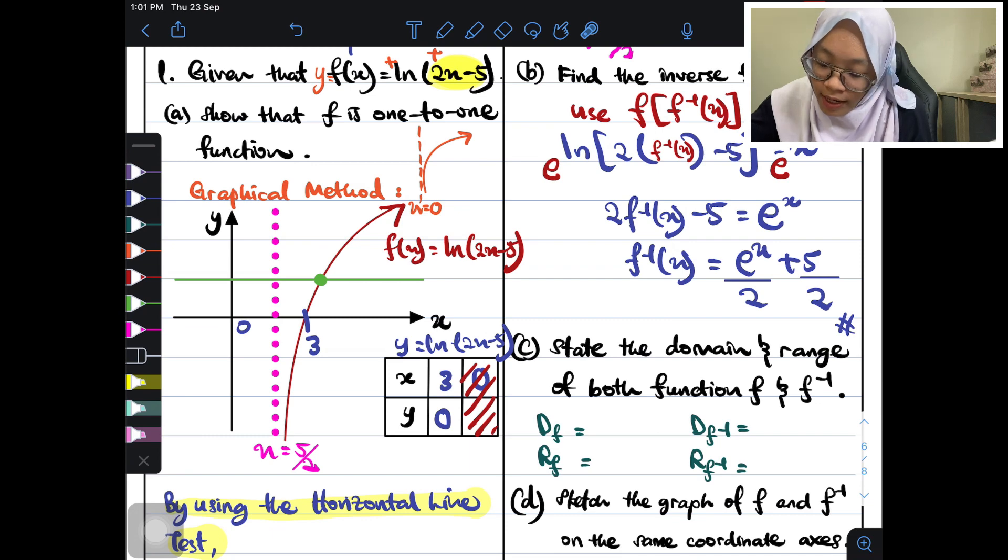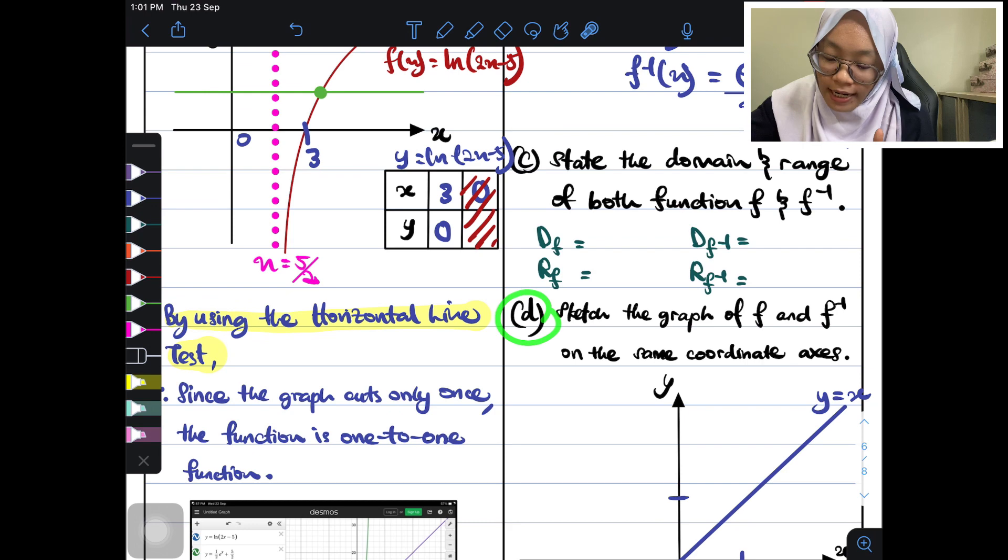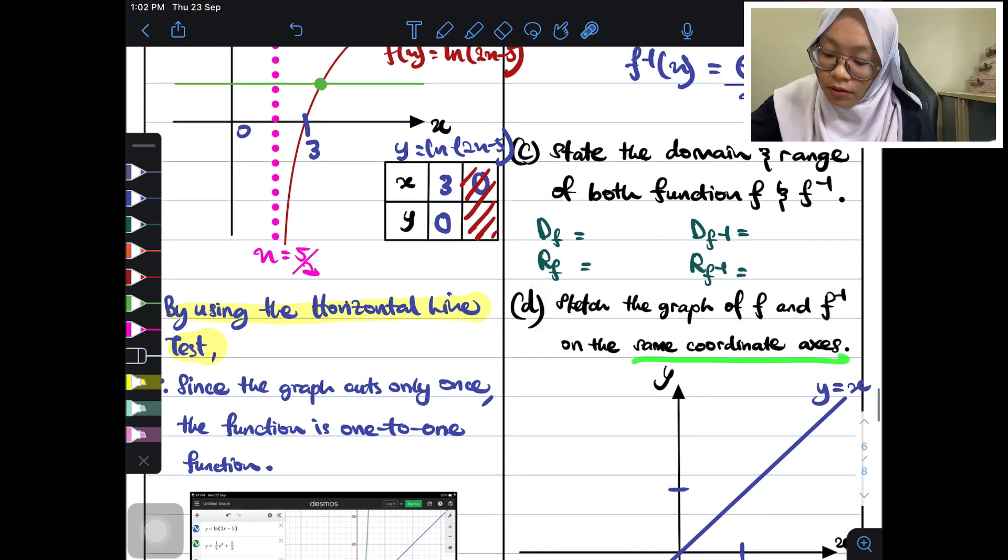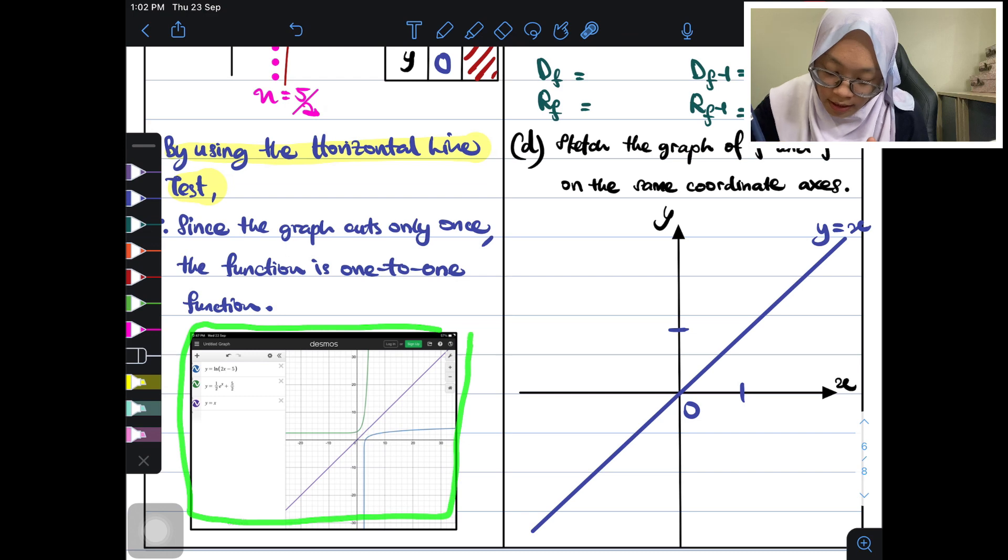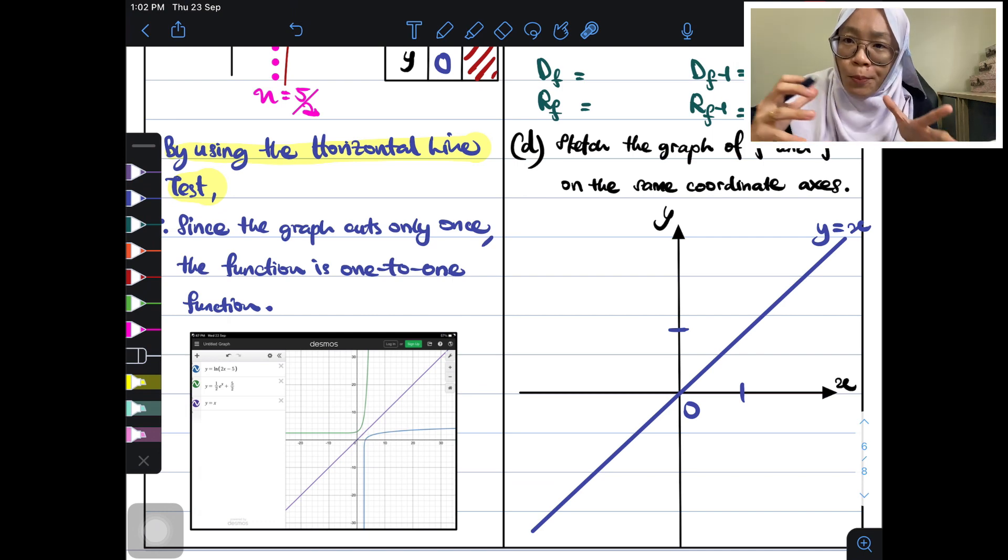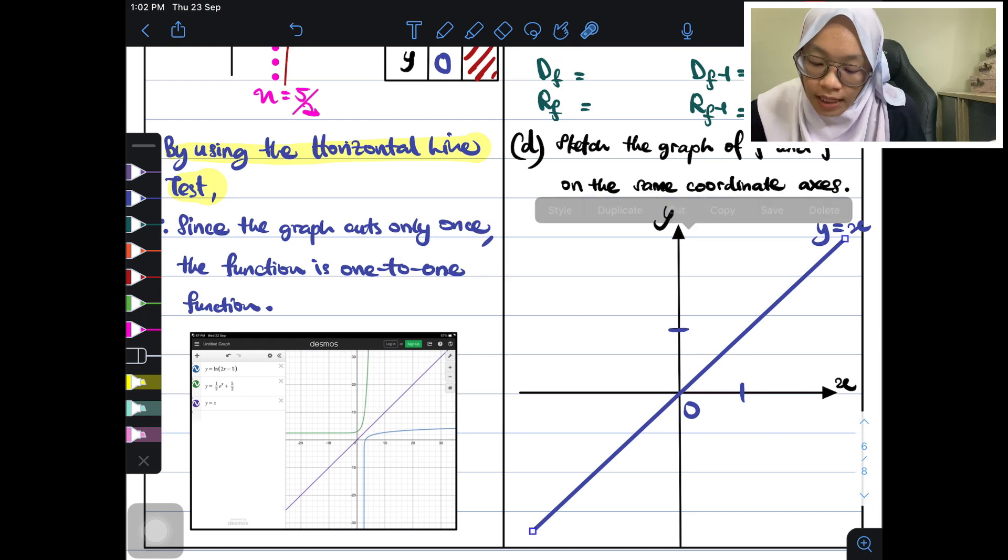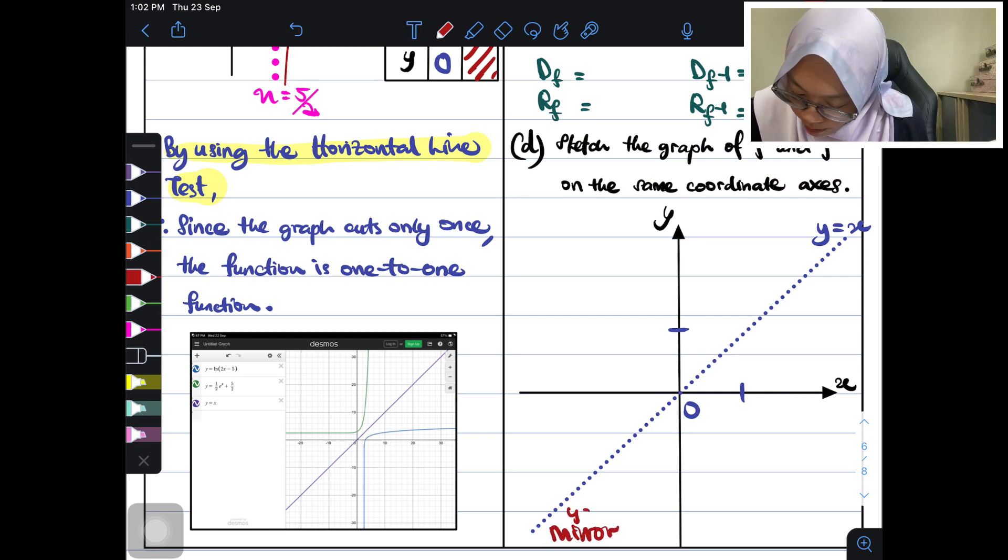Let's go to the next question. Dia kata find the domain and the range for both function. So quick. Kalau saya, saya skip soalan C. Saya akan pergi ke soalan D. Sketch the graph of F and F inverse on the same coordinate axis. So, I have prepared some answers here using the Desmos app. You can go to the Desmos app and you will see how perfectly graph can be drawn by using computer lah. But, of course, in exam we can't use that.